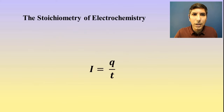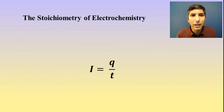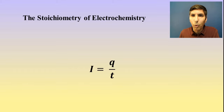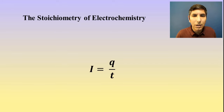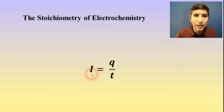This is the stoichiometry of electrochemistry. This is often how we calculate how much nickel or what other metal like gold or silver you might be able to plate out onto an electrode. Whenever we talk about the stoichiometry of electrochemistry, this is the equation that we're probably going to be using.